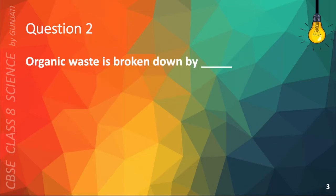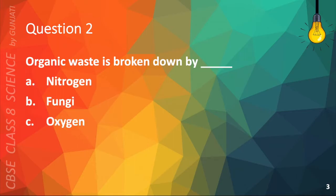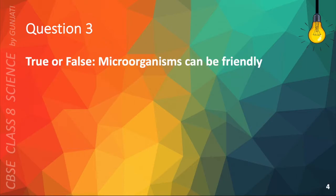Question 2. Organic waste is broken down by A. Nitrogen, B. Fungi, C. Oxygen, or D. Bacteria. The correct answer is D. Bacteria.